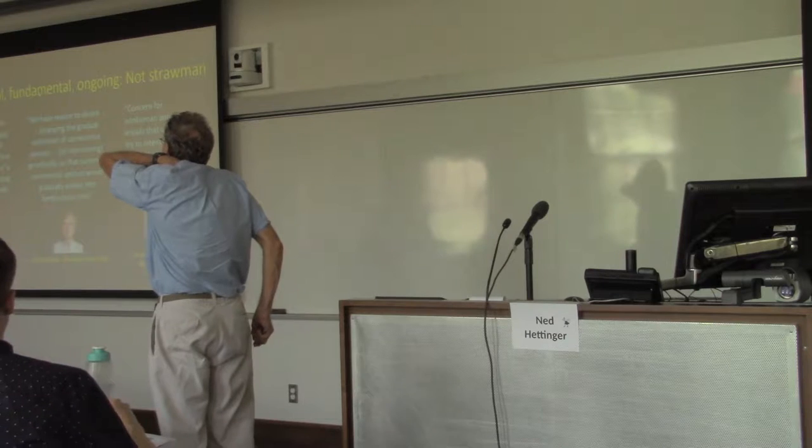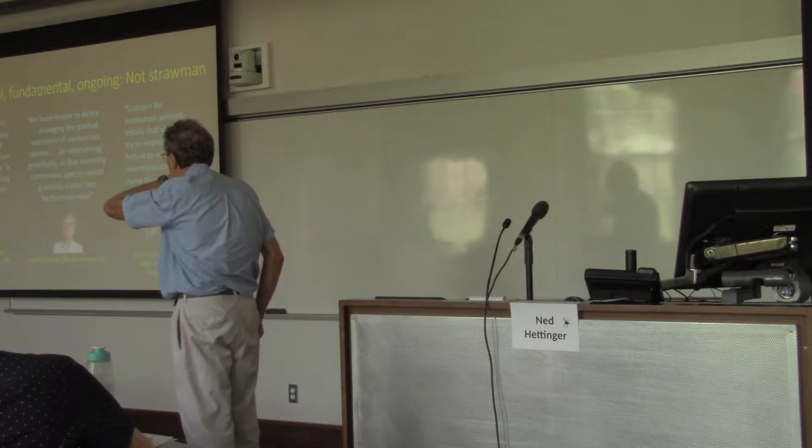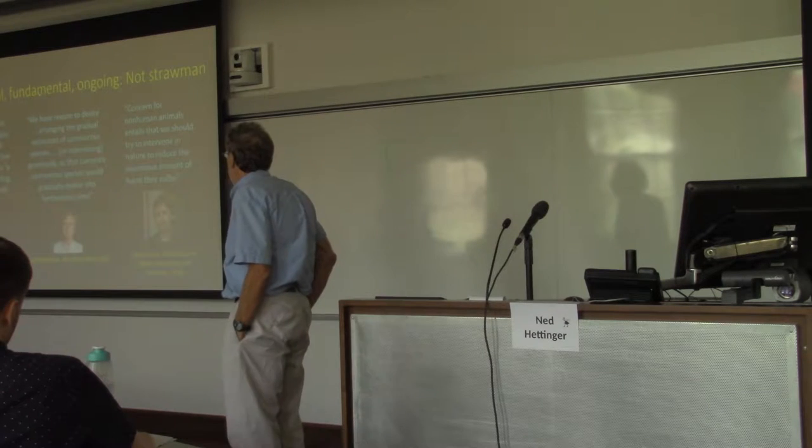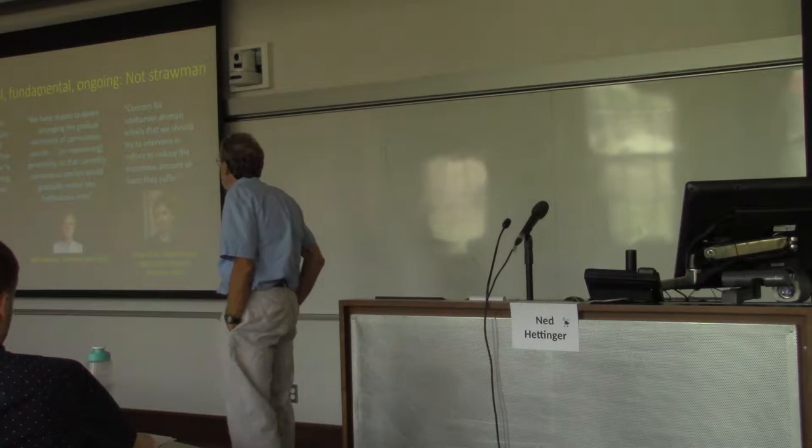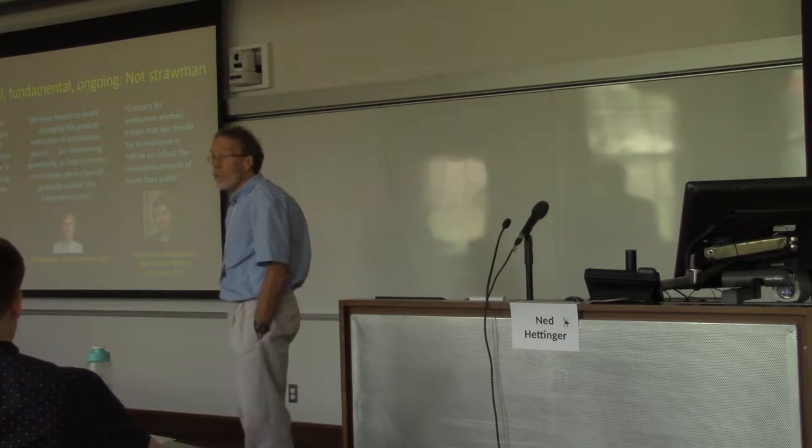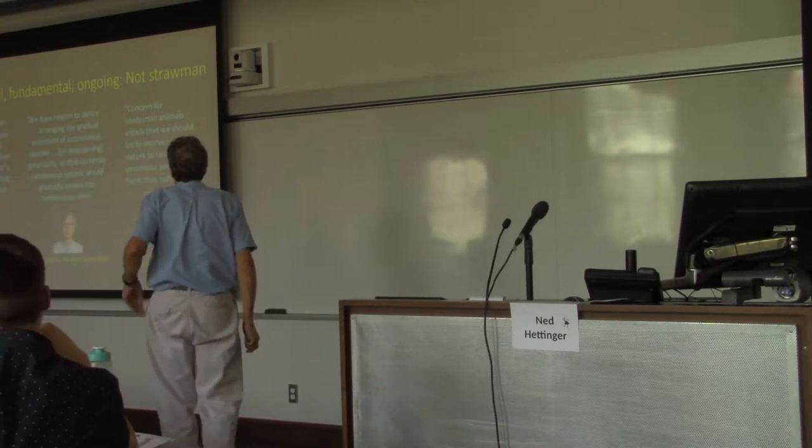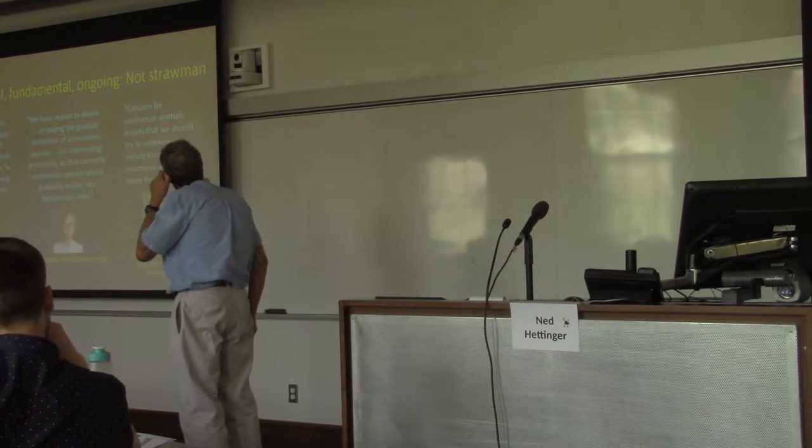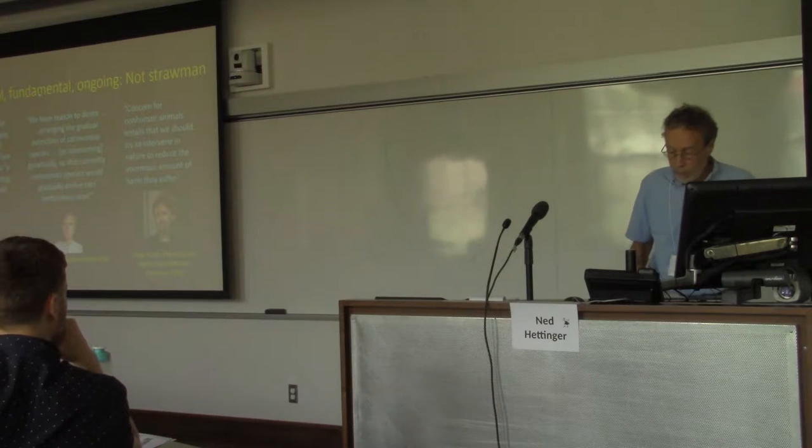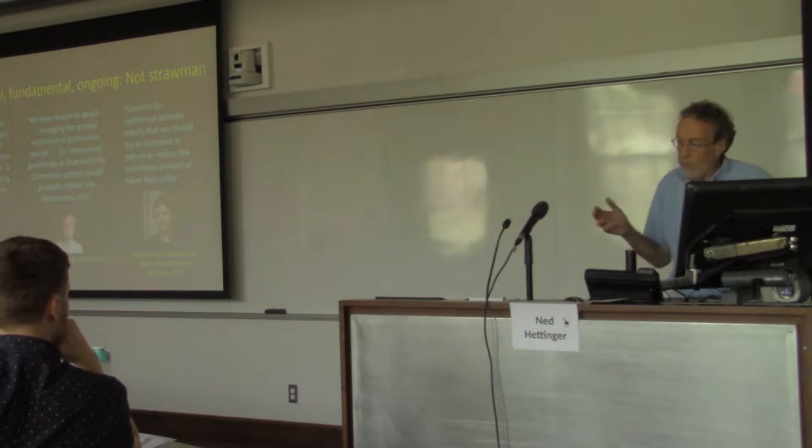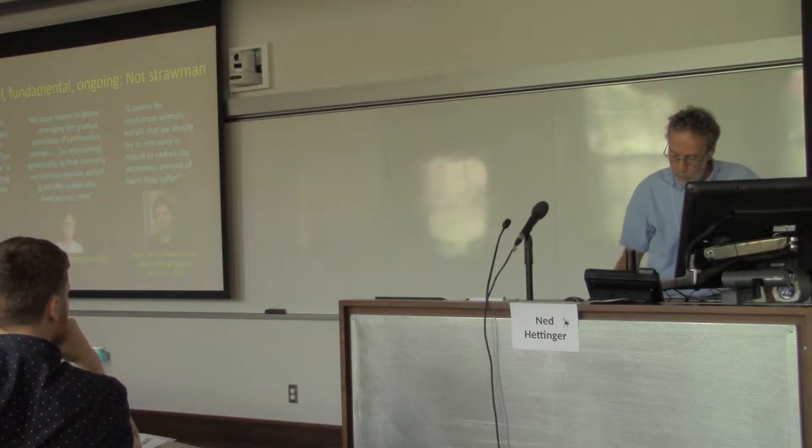Here you have Martha Nussbaum worrying about the lack of cooperative and supportive relations in nature and arguing that we need to supplant the natural with the just. You have Jeff McMahan arguing that we should arrange for the extinction of carnivorous species or maybe genetically alter them. Of course you have Oscar Horta arguing forcefully that the suffering in nature is immense and we need to intervene and reduce the suffering. So I think this conflict is a real conflict, it's fundamental, it's ongoing, it's not a straw man's conflict.